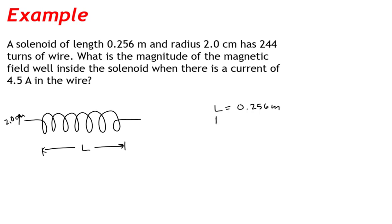The solenoid has 244 turns or loops of wire in it. The solenoid also carries 4.5 amps of current.